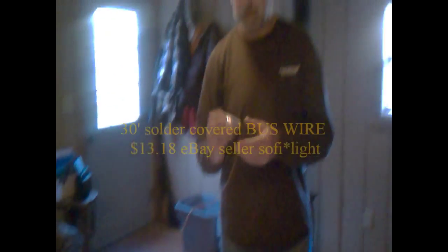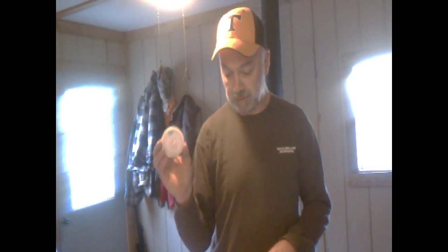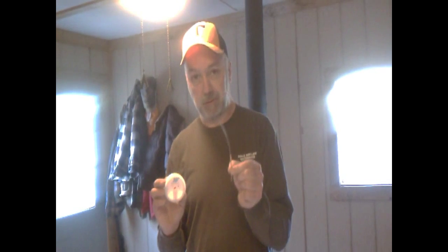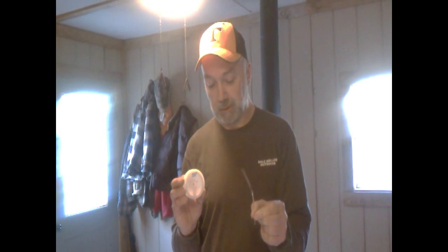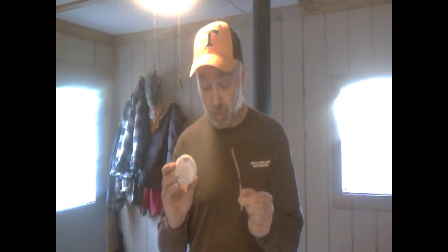The next thing is our pre-tinned bus wire. Now it comes in a roll like this, this is a 30 foot roll. You can buy it off eBay and it's not very expensive. I've already got it cut in six inch pieces for this project and we will be putting the six inch pieces on it and then trimming them to length.